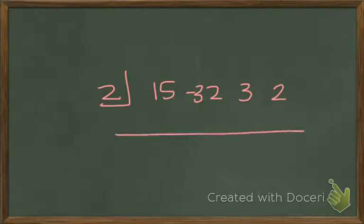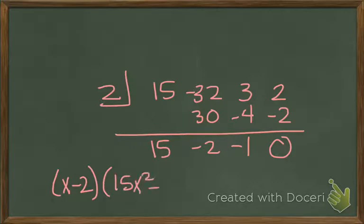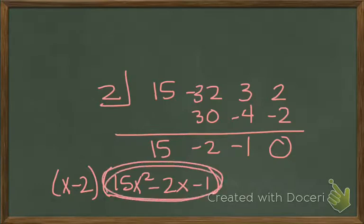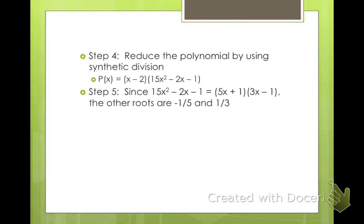Okay, so I'm going to use synthetic division because I'm more comfortable with it. So 15, that makes 30, -2, -4, -1, -2, 0. So that means we have x minus 2 as a factor, and then we have 15x² - 2x - 1. And then we can go ahead and factor this lovely.